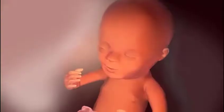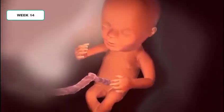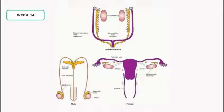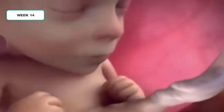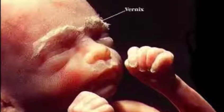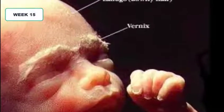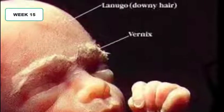At week 14 all the organs are formed. If it is a girl, the ovaries are now formed and descending to their future position. Your baby is leaping and bounding inside your body. The neck is getting longer, helping the head to stand more erect.